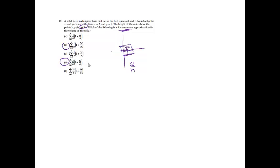They all had either 1 plus 3i over n or 1 plus 6i over n, which relates to the height 1 plus 3x. Since x goes from 0 to 2, I figured we multiply by 2 to get the proper answer — that's why I chose D. That might not be the best reasoning, but it gave the right answer.